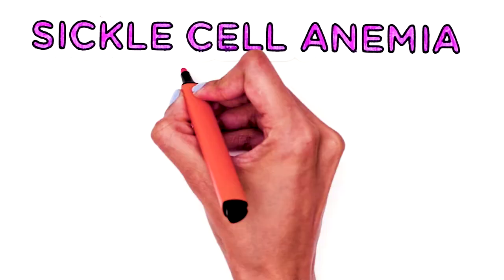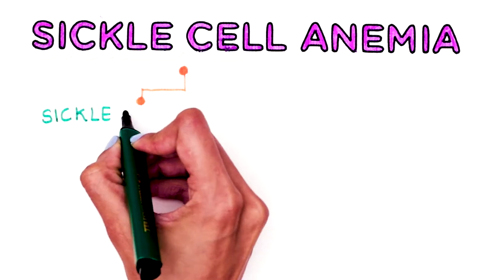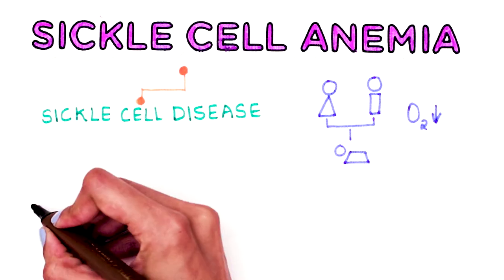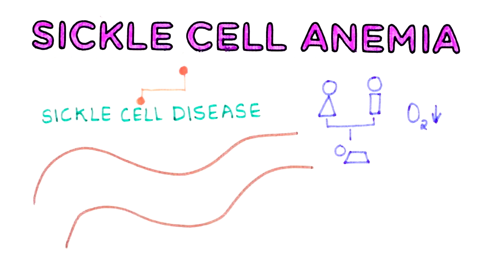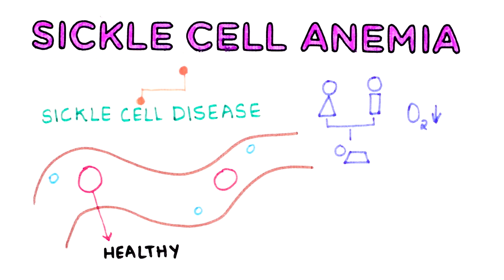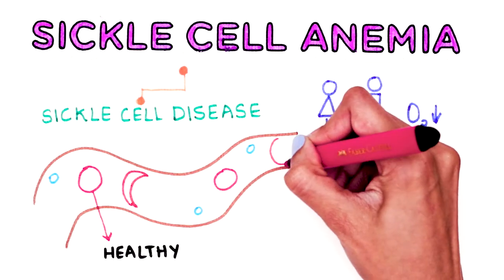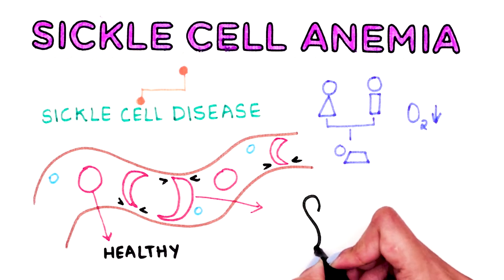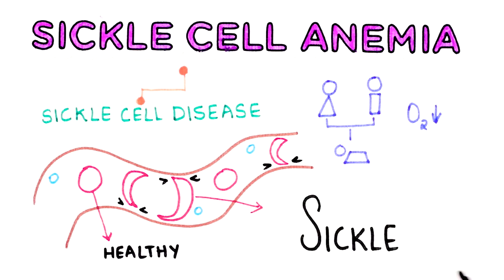Sickle cell anemia is one of the groups of disorders known as sickle cell disease. This is an inherited red blood cell disorder in which there aren't enough healthy red blood cells to carry oxygen throughout your body. Normally red blood cells are round and flexible and can move easily through the blood vessels. In sickle cell anemia the red blood cells are shaped like sickles or crescent moons. These rigid sickle-shaped cells can get stuck in small blood vessels, causing the blood flow and oxygen to parts of the body to slow down or get blocked.